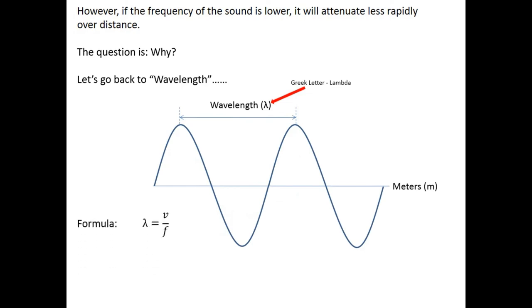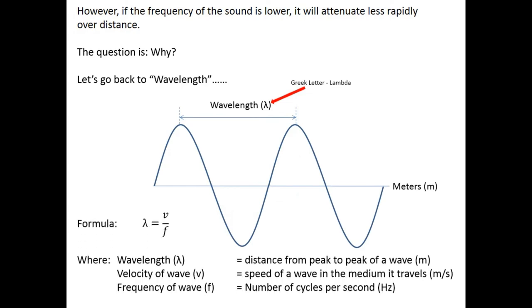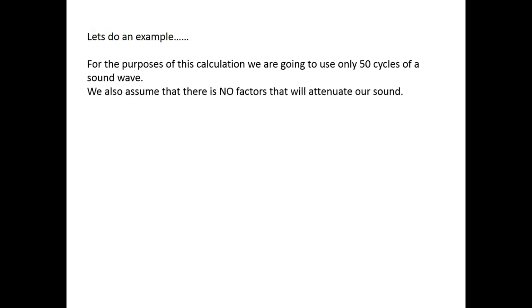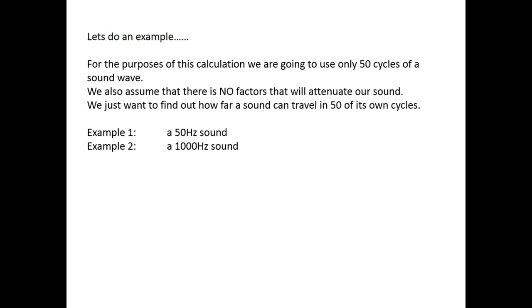Let's go back to our wavelength. Remember, the wavelength is the distance from peak to peak that one cycle will actually occupy. For the purposes of this calculation, we are going to use only 50 cycles of a sound wave. So we are going to take a frequency and let it run for 50 of its own cycles. Then again, we will assume that there are no factors that will attenuate our sound. We just want to find out how far the sound can actually travel in 50 of its own cycles.